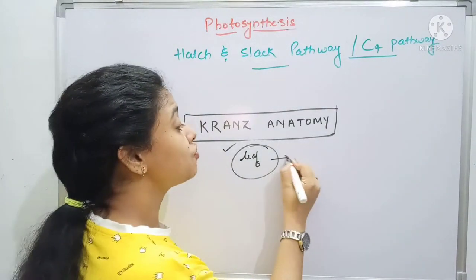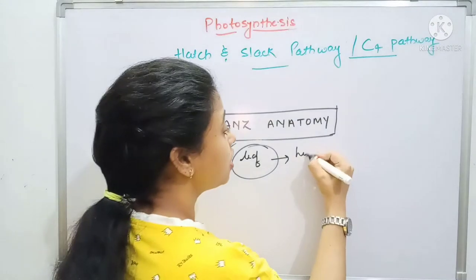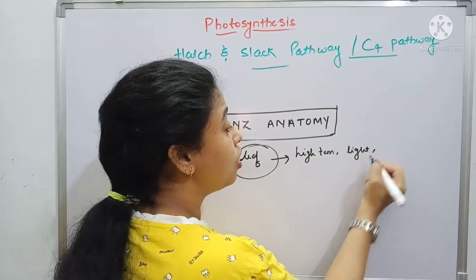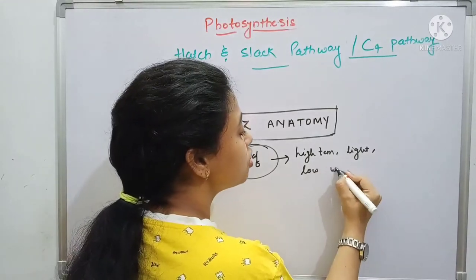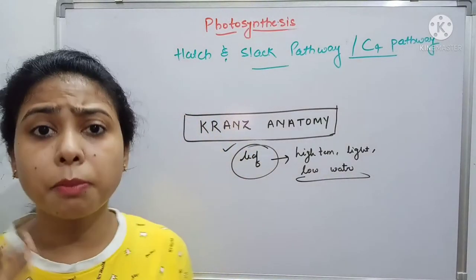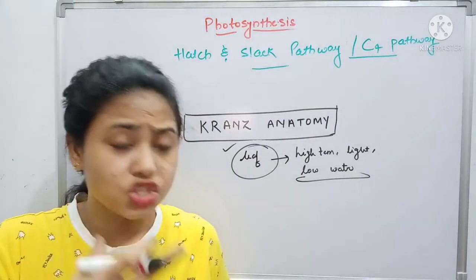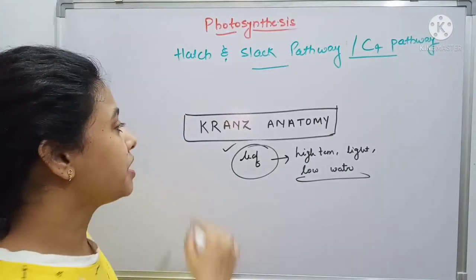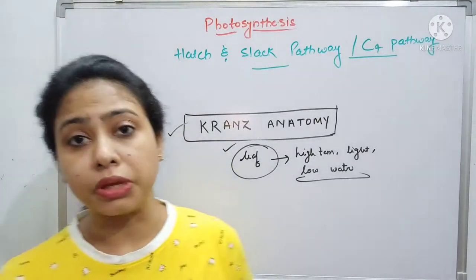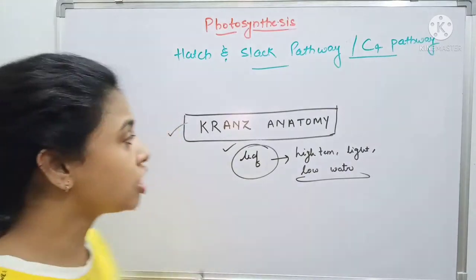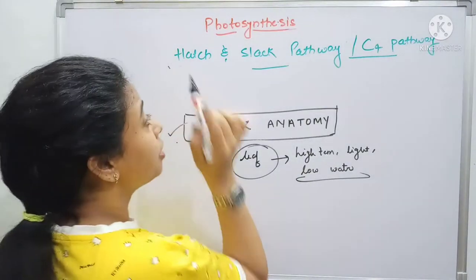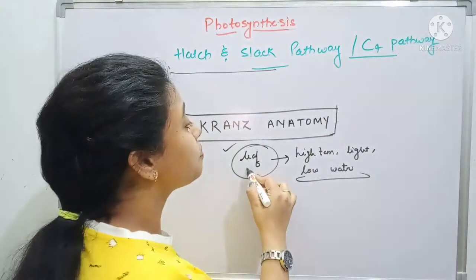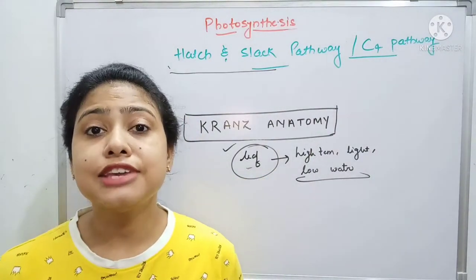Those plants which are found in high temperature, high intensity of light, and low water concentration. Do you have any idea, if a plant is found in such an extreme condition, how they will survive? They survive on the basis of this Kranz anatomy. Let's have a look at this Kranz anatomy, which comes under our main topic, that is the Hatch and Slack pathway or C4 pathway, because those plants are known as C4 plants.